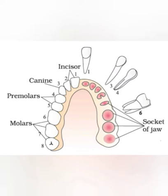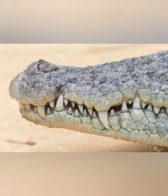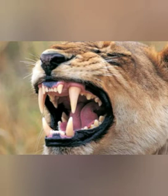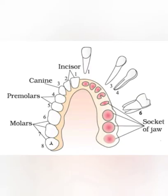Canines are basically used for tearing food, like a dog, cat, crocodile, lion, tiger, etc. Canines are total 4 in number and are located 2 behind the left incisor and 2 behind the right incisor.